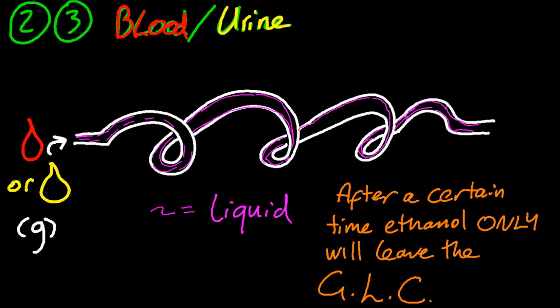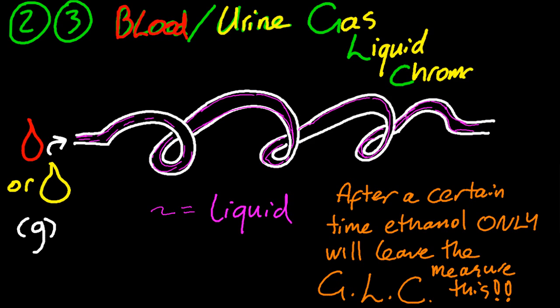So then you measure that, and it's called a GLC. So after a certain amount of time, the alcohol will come out. Now what does GLC mean? Well, gas, liquid, chromatograph. That's the name of the readout that you get, and it's a gas-liquid chromatography machine.